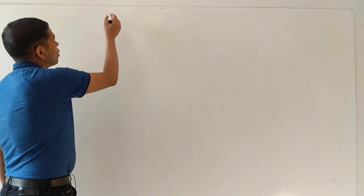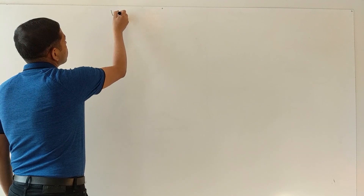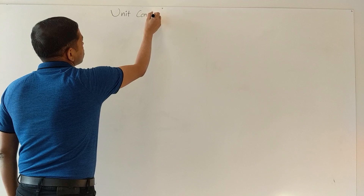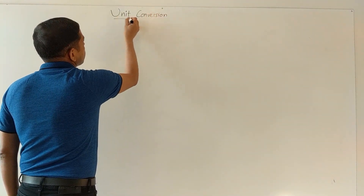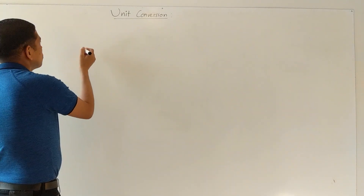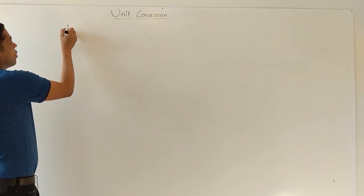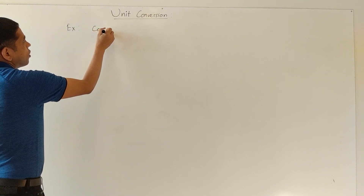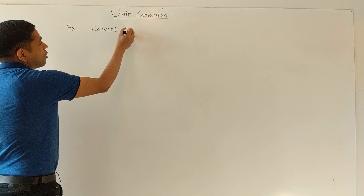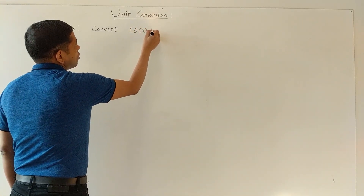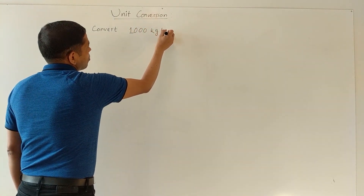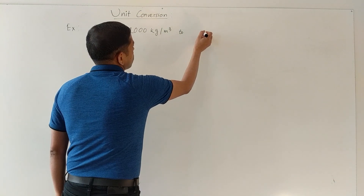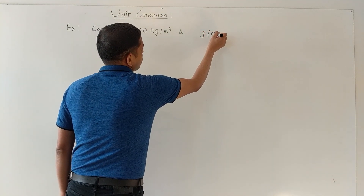Hi there. Today we will be talking about unit conversion. Let me begin with an example here. Convert 1000 kilogram per meter cubed to gram per cc.